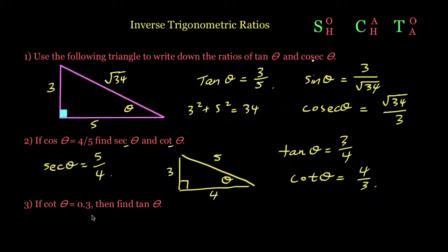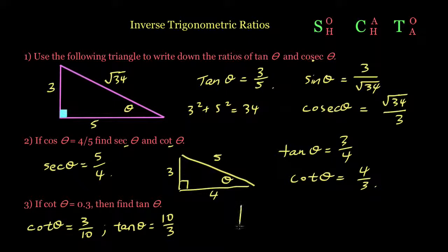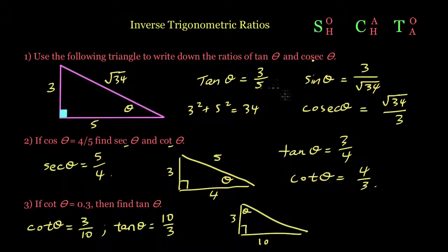For the last question: if cot theta equals 0.3, find tan theta. First, rewrite 0.3 as a fraction: 0.3 = 3 over 10. Since tan is the inverse of cot, tan theta is simply 10 over 3. If the question asked for another ratio like sine or cosine, we'd rebuild the right-angle triangle, place 10 as the opposite and 3 as the adjacent, then find the hypotenuse using Pythagoras to get any other ratio needed.